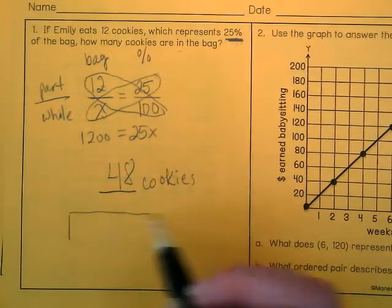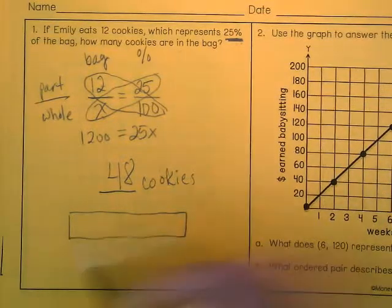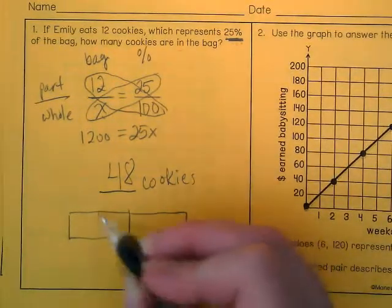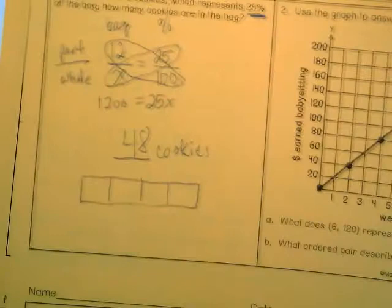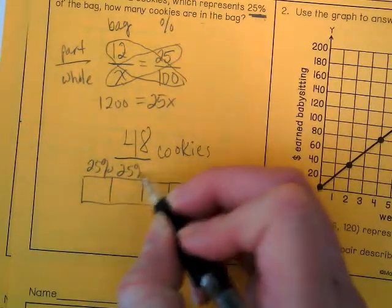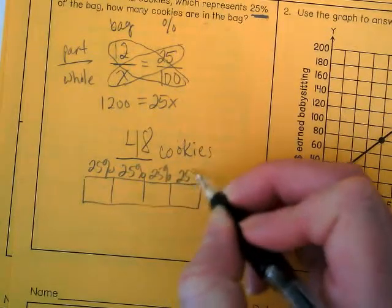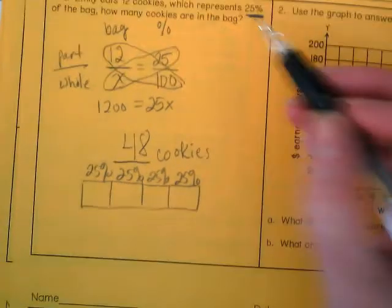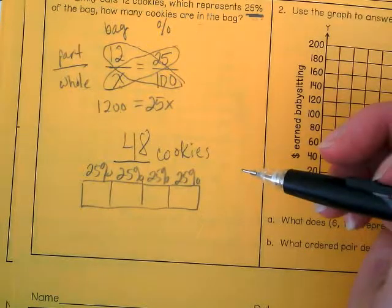And I can show this if I wanted to do it like in a bar model. If this is my whole bag and each section of it is 25%, why is each section 25%? Because it's telling us we have 25% and we know how many 25% make up a whole.